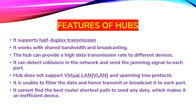The features of hub include: broadcast — it operates by broadcasting. It also provides bandwidth sharing. It can provide high data transmission rates to different devices. It can detect collision in the network and send jamming signals to each port, which reduces the chance of collision. However, it is unable to filter the data, so data packets are sent to all nodes.